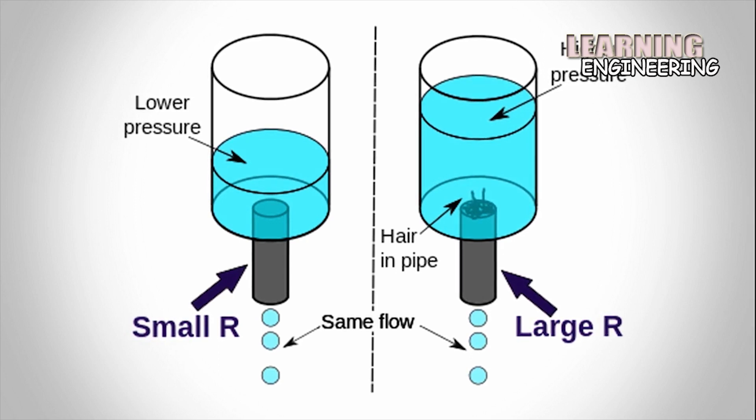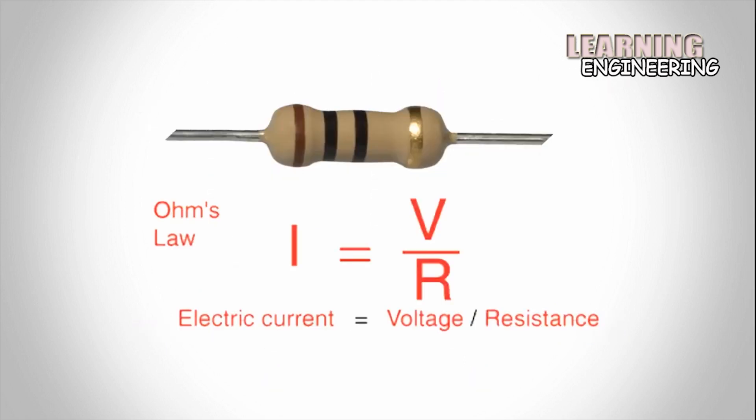The behavior of an ideal resistor is dictated by the relationship specified by Ohm's law. Ohm's law states that the voltage V across a resistor is proportional to the current I, where the constant of proportionality is the resistance R.